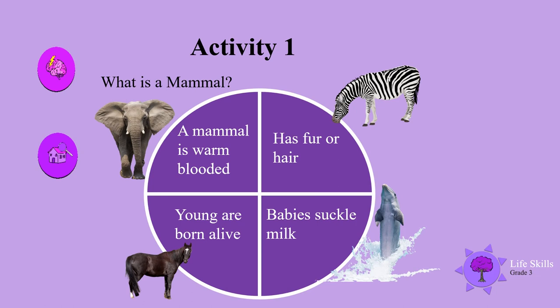Activity 1. What is a mammal? A mammal is warm-blooded, has fur or hair, the babies suckle on milk, and the young are born alive. Look at these beautiful animals that are all mammals.